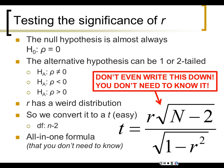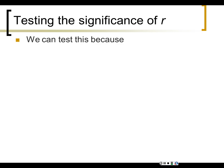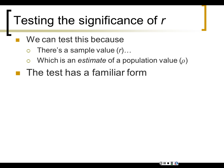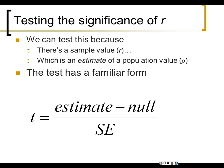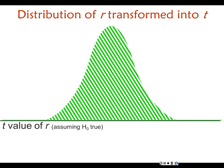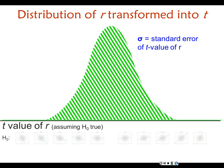We test the significance of r because there's a sample value that estimates a population value. The test follows the same pattern we've always seen: sample estimate minus the null hypothesis estimate, divided by the standard error. Once you've transformed r into a t-value you can test everything in the t-distribution. The standard error is the standard deviation of the distribution of all possible correlation coefficients that could happen if the null hypothesis were true.